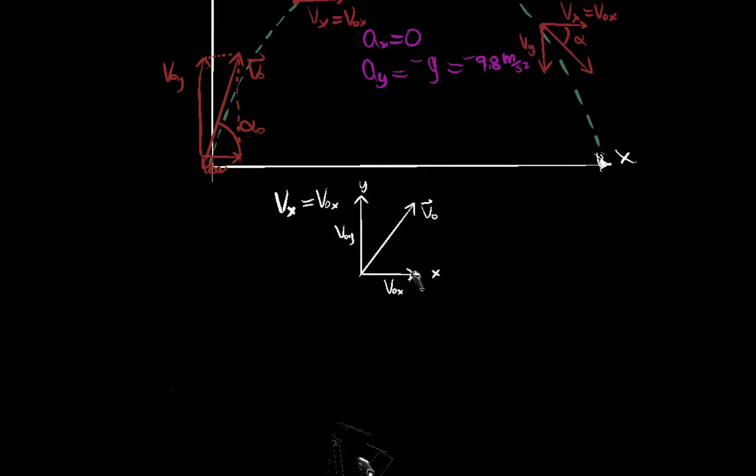So if we look at our trigonometry here, this is a right angle, and we have some angle here, alpha naught, that it's being shot at. And so what that means is v naught x, that's equal to v naught, this guy, the magnitude of that guy, times cosine of alpha naught. And v naught y is equal to v naught sine alpha naught.